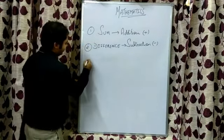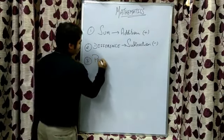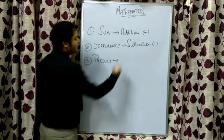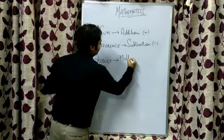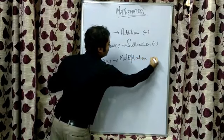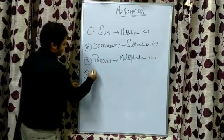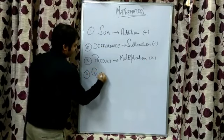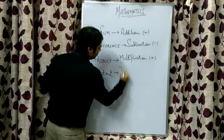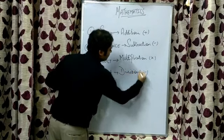Difference basically means subtraction. Third term is product, that means multiplication and the symbol is cross. Fourth term is quotient, which means division and the symbol is the division sign.